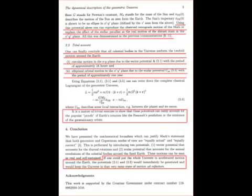If one could put the whole universe in accelerated motion around the Earth the potentials 3.1 and 3.5 would immediately be generated and would keep the universe in that very same state of motion ad infinitum.